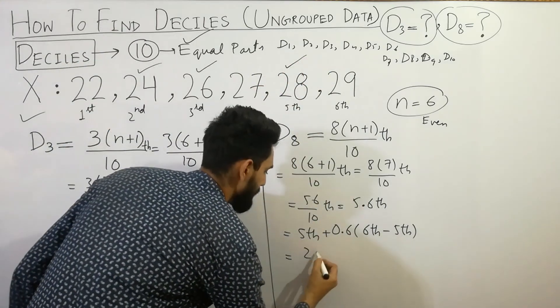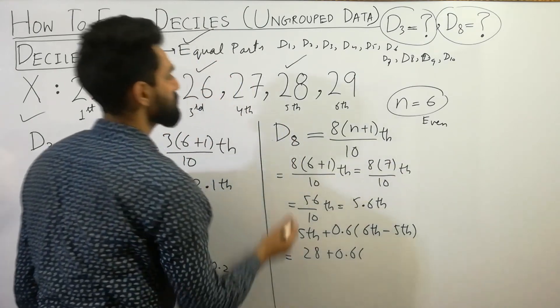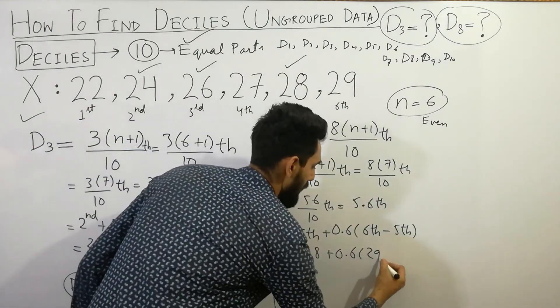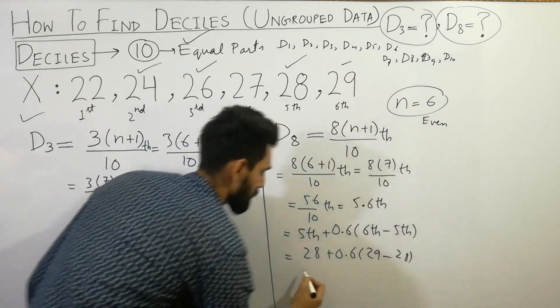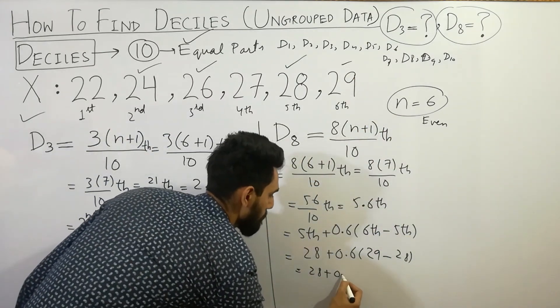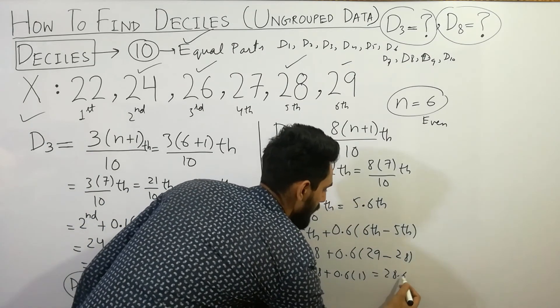5th term is here 28 plus 0.6, and the next 6th term is given here 29 minus 5th term is given here 28. We will get the value here 28 plus 0.6, which will be 1, so 28.6. I've calculated the value of d8.